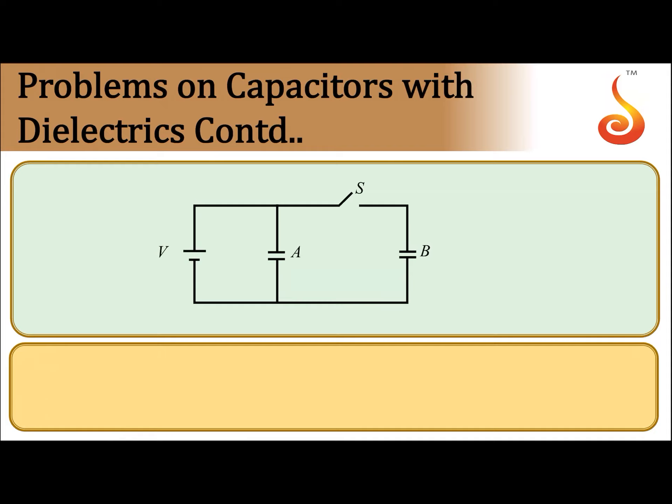After that, between the plates of A and B dielectric is placed before that switch S is closed. When switch S is opened, B is not connected to battery but A is still connected to battery. Now we have to calculate ratio of energies before introduction to after introduction.